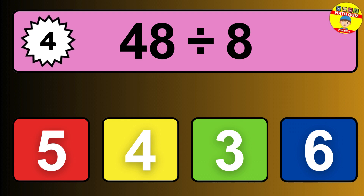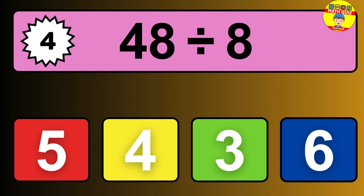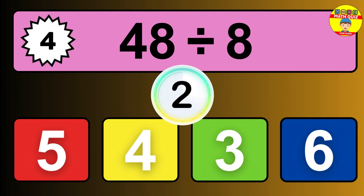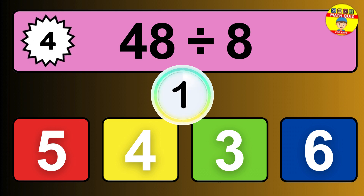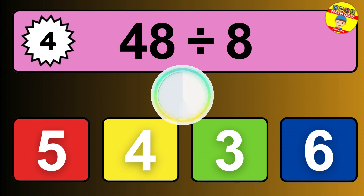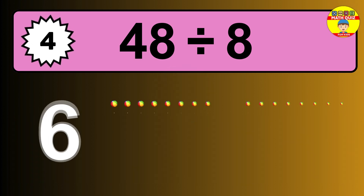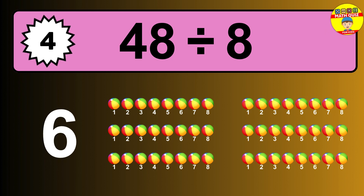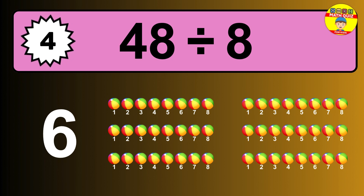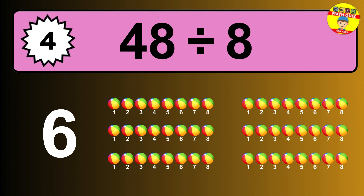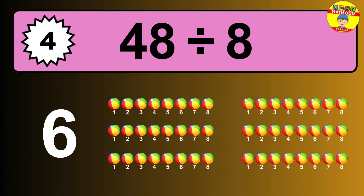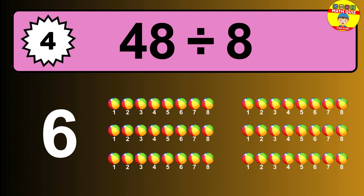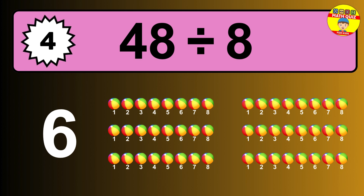48 divided by 8 is... time to think. Let's go to the solution. Divide the number 48 by 8. Each group contains 8 units. So dividing 48 by 8 results in 6 equal groups. Thus, the result is... 48 divided by 8 equals 6.